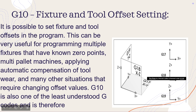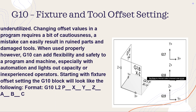G10 fixture and tool offset setting — it is possible to set fixture and tool offsets in the program. This can be very useful for programming multiple fixtures that have known zero points, multi-palette machines, applying automatic compensation of tool wear, and many other situations that require changing offset values. G10 is also one of the least understood G-codes and is therefore underutilized.